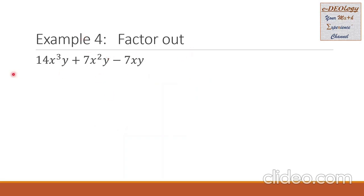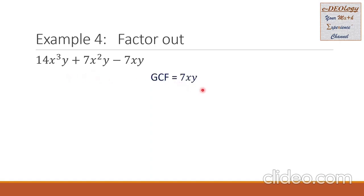Example 4: factor out 14x cubed y plus 7x squared y minus 7xy. Note that we have three terms here, and our GCF is 7xy. Then we write the factors: first, we copy the GCF as one of the factors, then multiply by the polynomial.